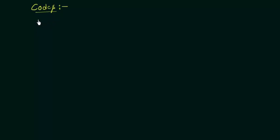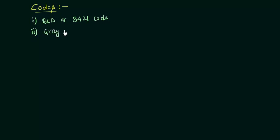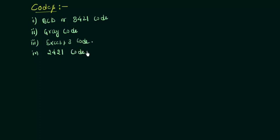Let's start our course from this presentation. First, I will write down the topics we are going to study. The first one is BCD, also called the 8421 code — we will complete this in this lecture. The second one is Gray code. The third one is XS3 code. The fourth one is the 2421 code. We will see what these are and some important properties useful when solving questions.